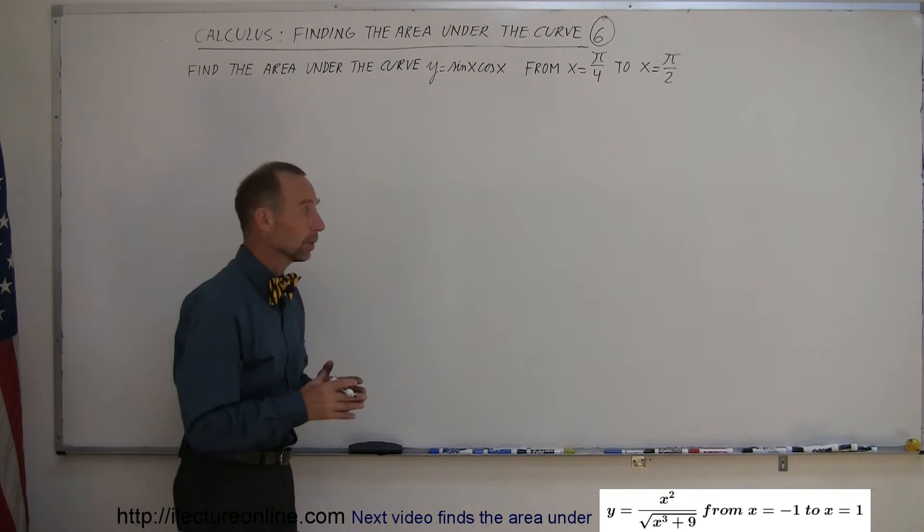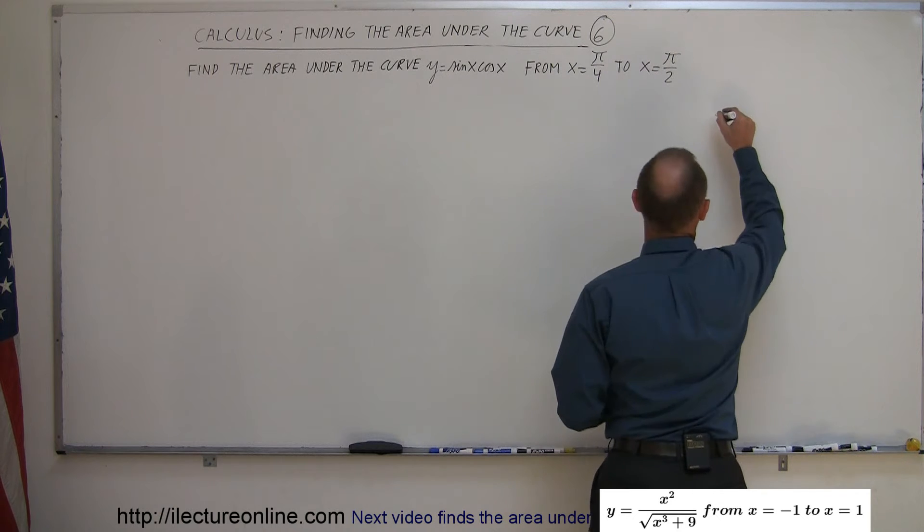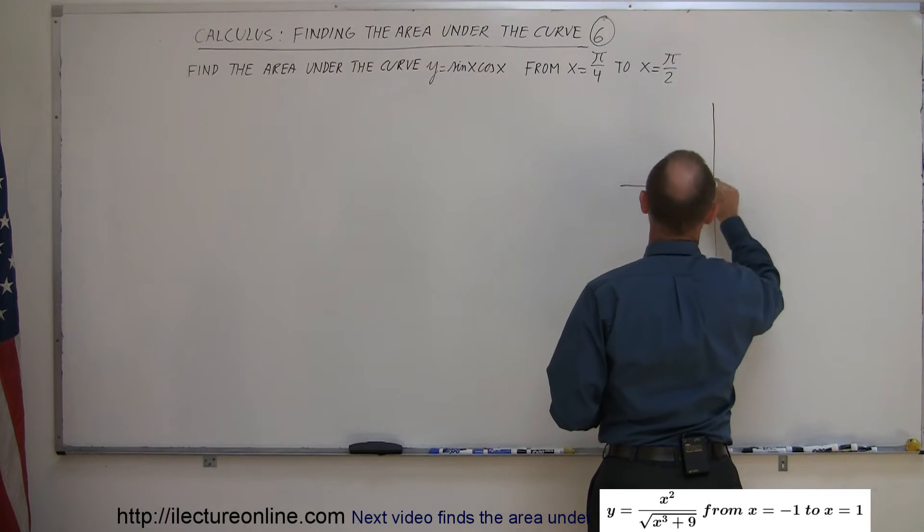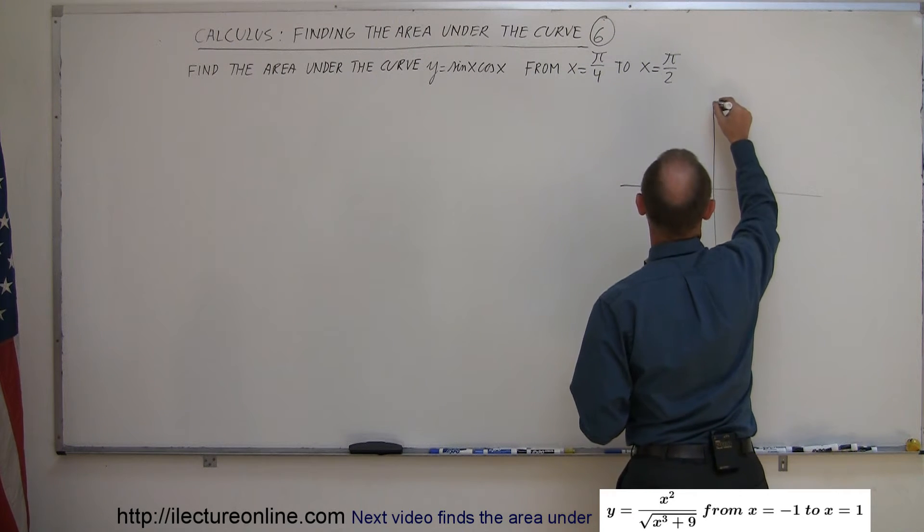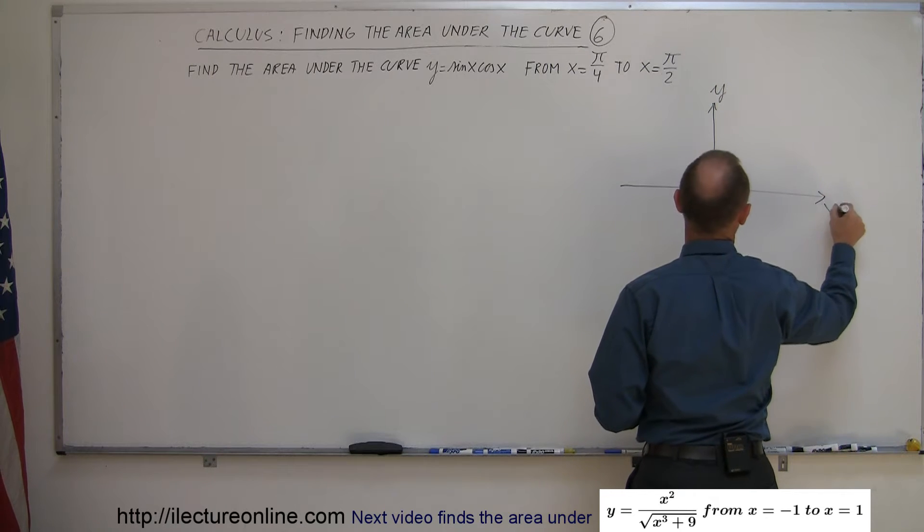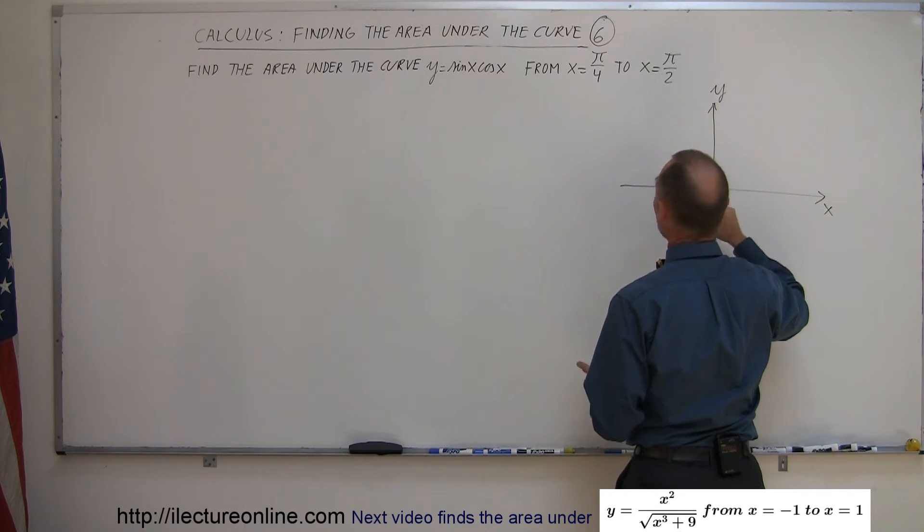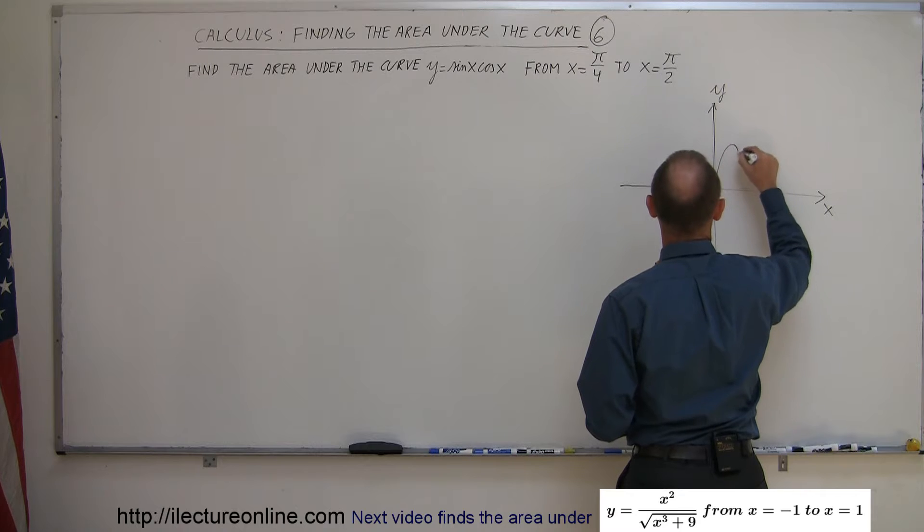Well, let's try to graph the function. So first of all, it's a product of two functions. So we have the y-axis, we have the x-axis. First, let's graph the sine of x. The sine of x looks like this.